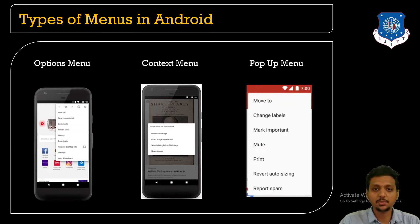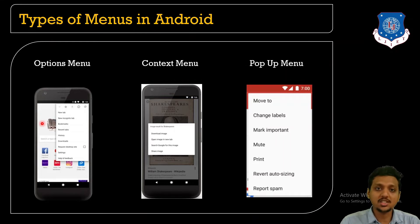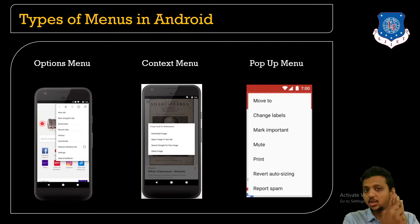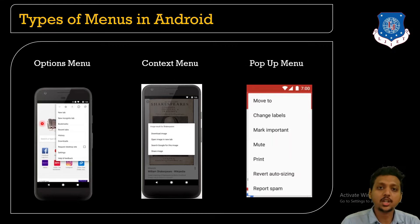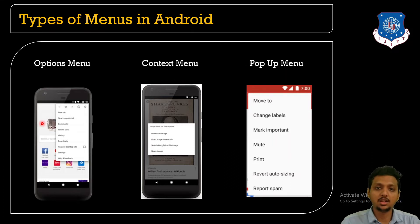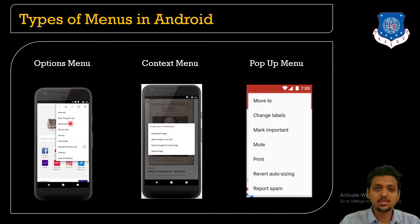The first one is the option menu. For example, when you open a WhatsApp application and click on the three dots in the top right corner, one menu opens up — this is known as the option menu. The same applies to a browser's top menu bar.